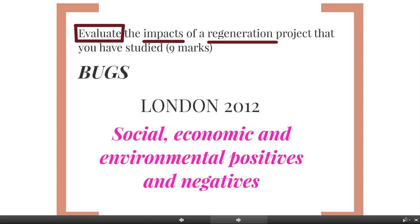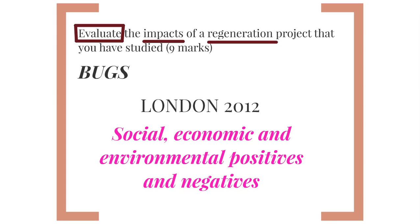Finally, the nine mark question. It says 'evaluate the impact of a regeneration project that you have studied — nine marks.' Remember BUGS: boxing your command word, underlining key words, going back, reading it again, and sequencing your answer. The command word is evaluate — with a nine mark question you may also see 'to what extent' or 'discuss,' but it means the same thing: you've got to have two sides to the story, exactly the same as with that six mark question. I've underlined 'impacts' — impacts can be positive and negative, and if you're going to evaluate properly you need to give both.